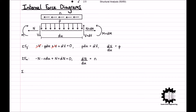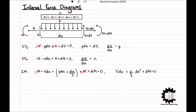Finally, equating the sum of all moments about the right end of the section to equal zero, we get: negative M plus V·dx plus p·dx times dx/2 plus M plus dM equals zero. The M terms cancel, giving us V·dx plus (p/2)·dx² plus dM equals zero. Since dx is very small, dx² is negligibly small and can be neglected, giving us negative V·dx equals dM, which rearranges to dM/dx equals negative V.